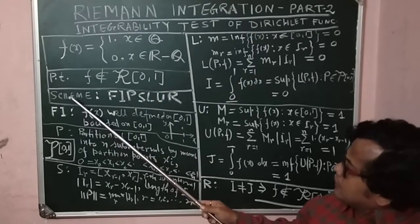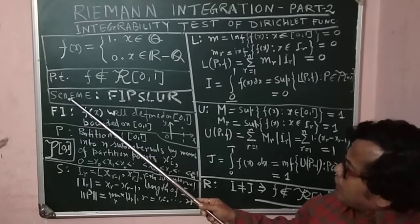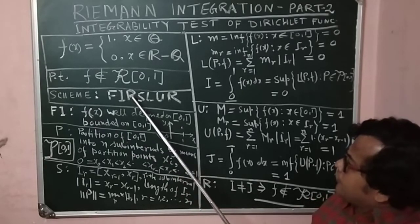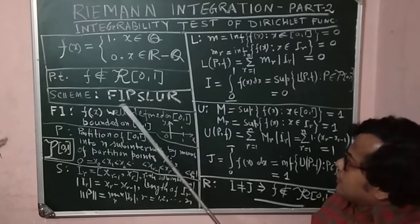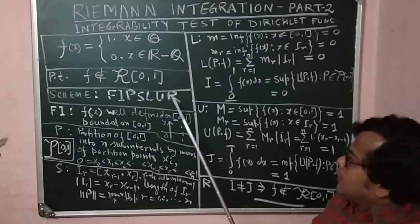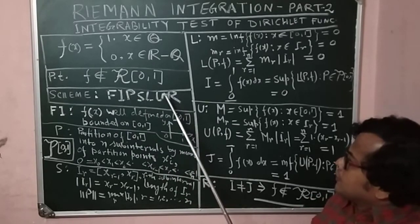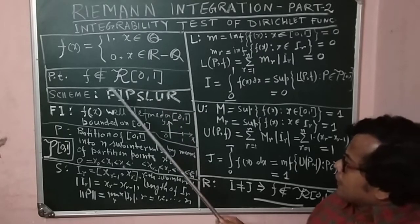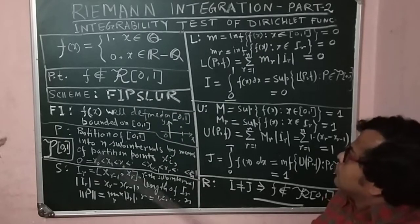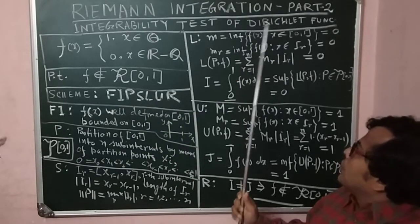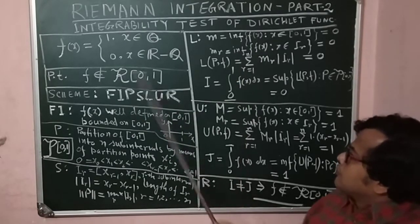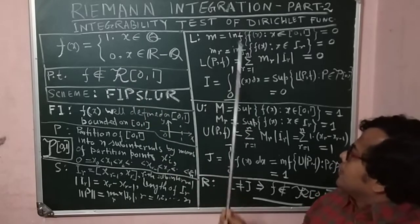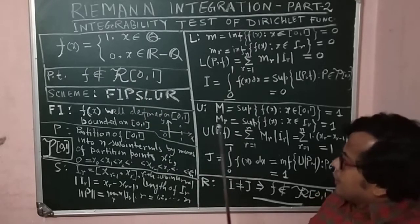As we have discussed in Riemann integration part 1, I will follow the scheme FIP SLUR. Following this scheme, I can systematically show whether a function belongs or does not belong to R[a,b].